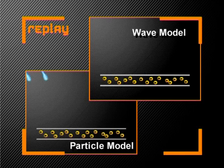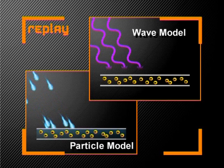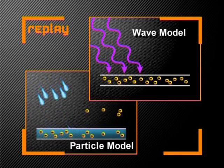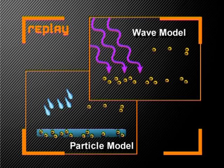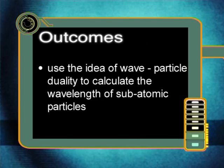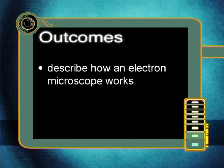Welcome to this final lesson in our series investigating electromagnetic radiation. In this series we have explored what electromagnetic radiation is and have seen how people have used their understanding of this form of energy in different ways. We have found out that electromagnetic radiation can be represented by both a wave and a particle model, so the model that best represents electromagnetic radiation is wave-particle duality. In this lesson we are going to apply the idea of wave-particle duality to matter, and we will then see how our new understanding of the nature of matter has resulted in the development of the electron microscope. By the end of this lesson you should be able to use the idea of wave-particle duality to calculate the wavelength of subatomic particles and describe how an electron microscope works.